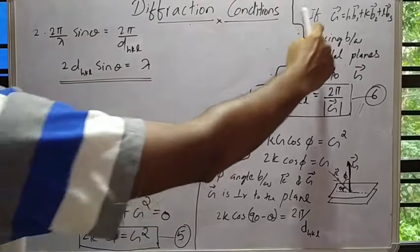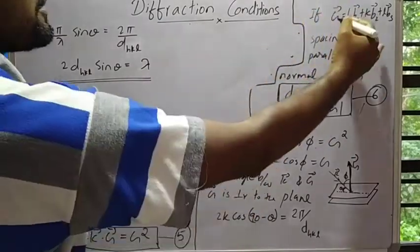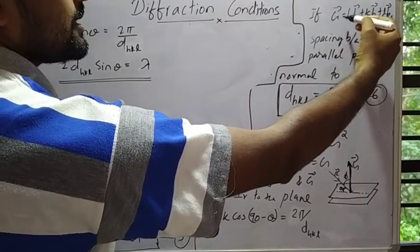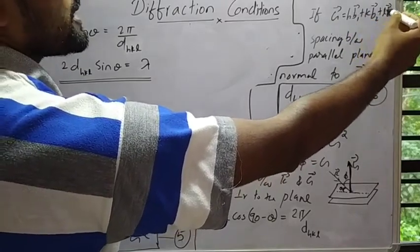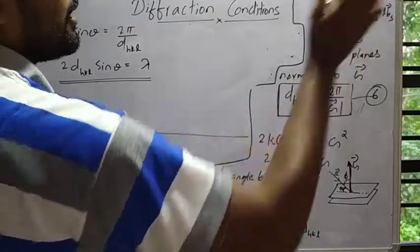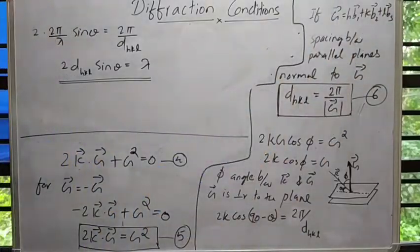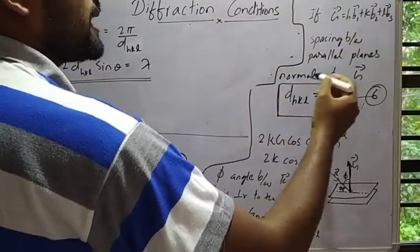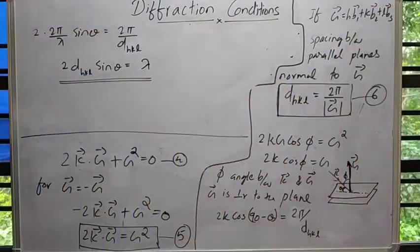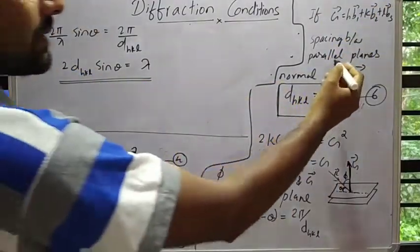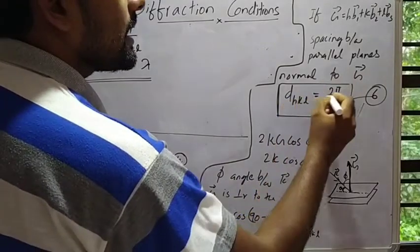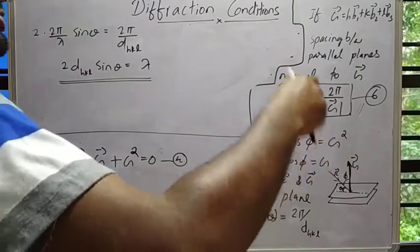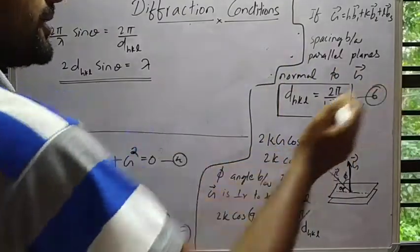If we take the reciprocal lattice vector G = h·b1 + k·b2 + l·b3, where h, k, l are the Miller indices, and if d_hkl is the spacing between parallel planes normal to G, we can derive the Bragg condition. To get this equation we need to do some more work, which will be covered in another video.